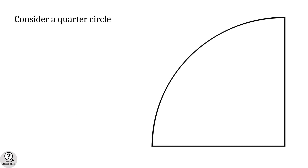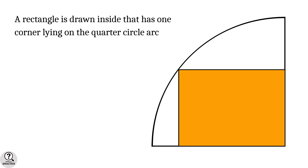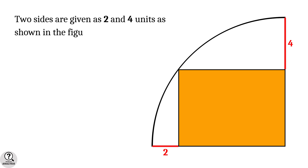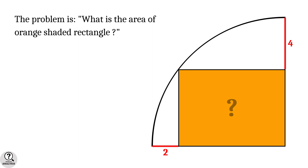Consider a quarter circle. A rectangle is drawn inside that has one corner lying on the quarter circle arc. Now two sides in the diagram are given as 2 and 4 units as drawn in the figure. The problem is: what is the area of this orange shaded rectangle?